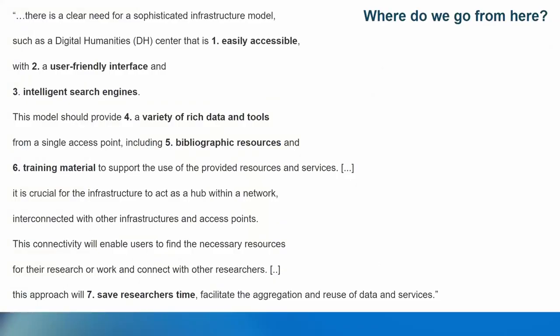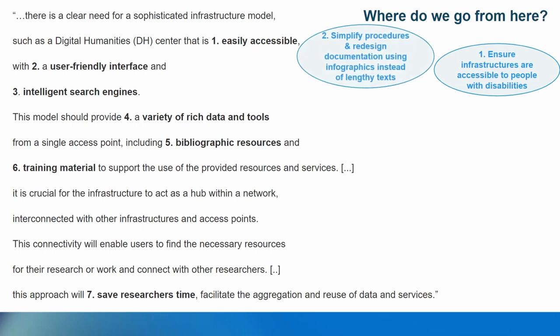After reviewing these findings, what can we do? Recalling the conclusion: there is a clear demand for a sophisticated infrastructure model — a digital humanities center — easily accessible with a user-friendly interface and intelligent search engines. We could ensure infrastructures are accessible to people with disabilities. We can improve user friendliness by simplifying procedures and redesigning documentation with infographics instead of lengthy texts. For intelligent search engines, we can enhance them with features like voice search.